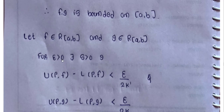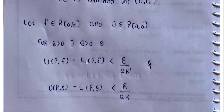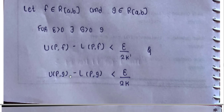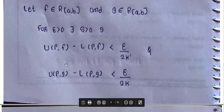For every epsilon greater than 0, there exists delta greater than 0 such that U(P, f) minus L(P, f) is less than epsilon upon 2k'. Also, U(P, g) minus L(P, g) is less than or equal to epsilon upon 2k.